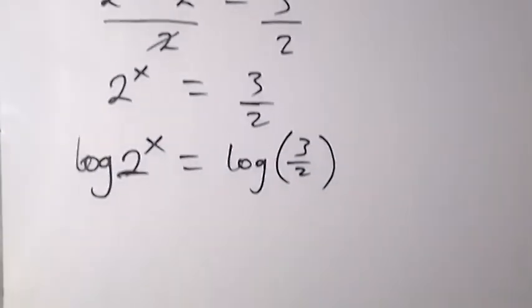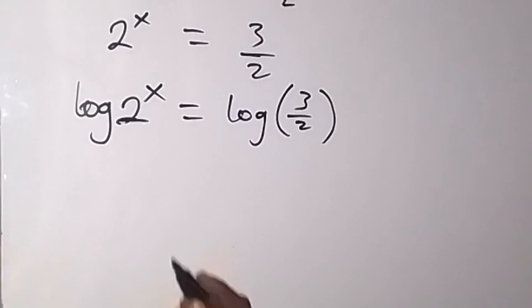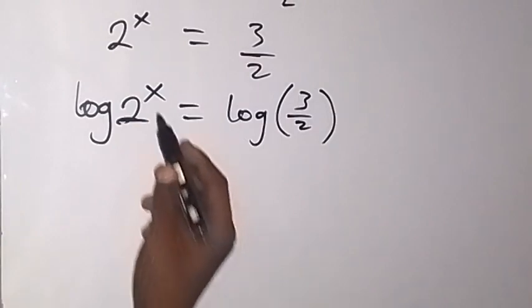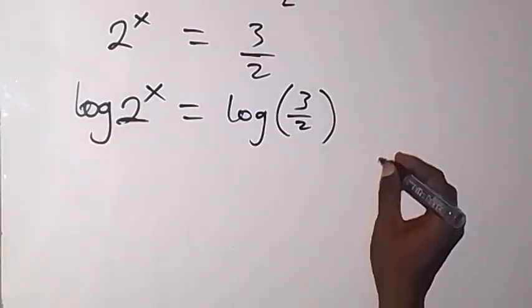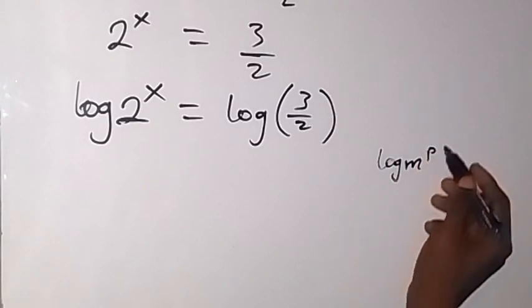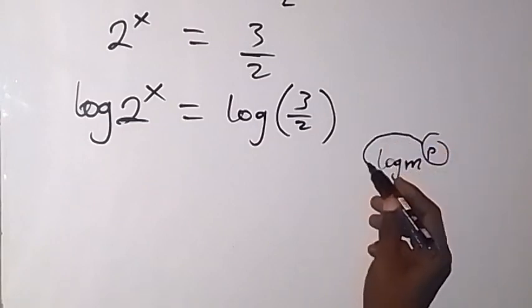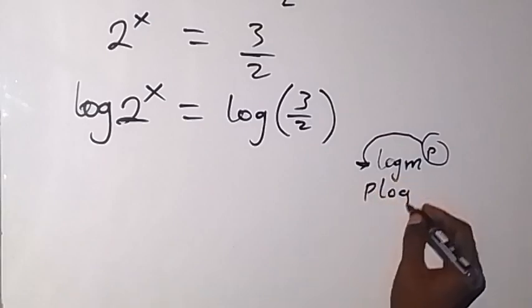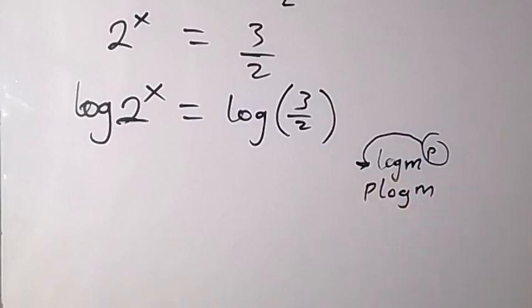And when we apply the law of logarithms, on this side, the power can come to the back. That is when we have log m raised to power p, this power of p can come to the back here and we have p log m. So that's power log from the law of logarithms.